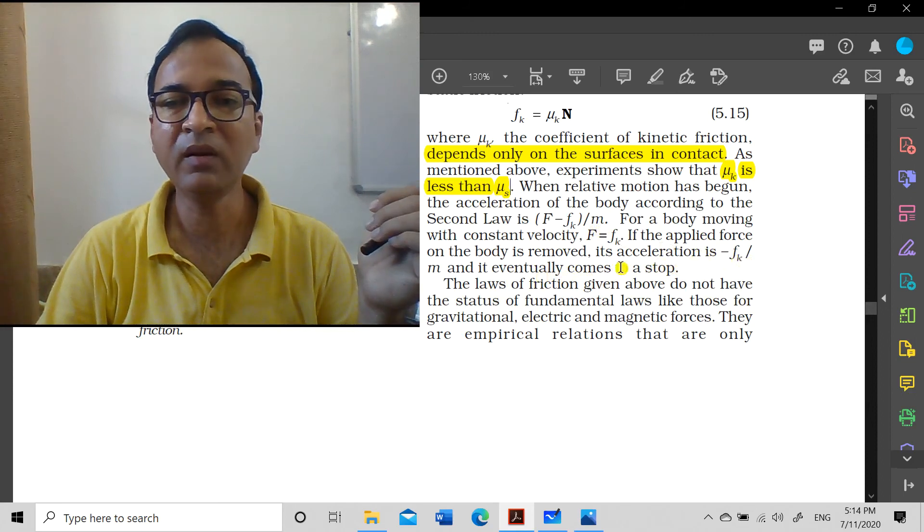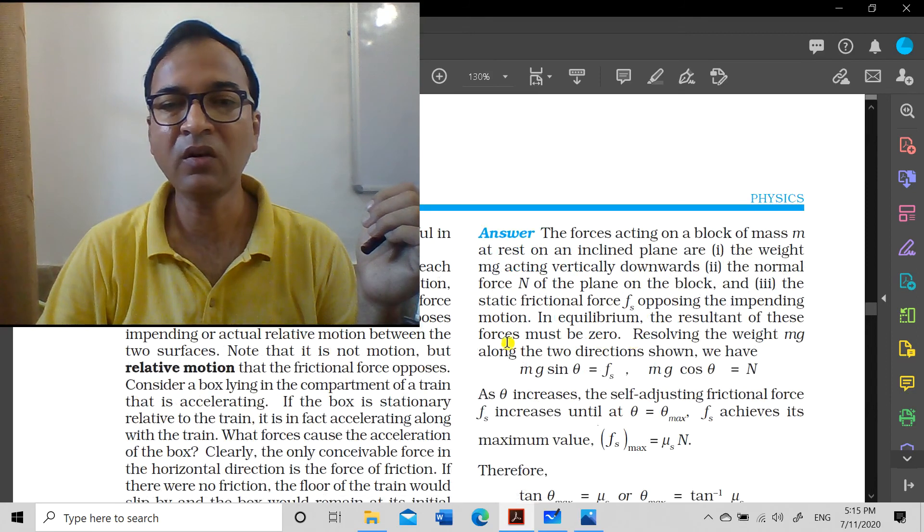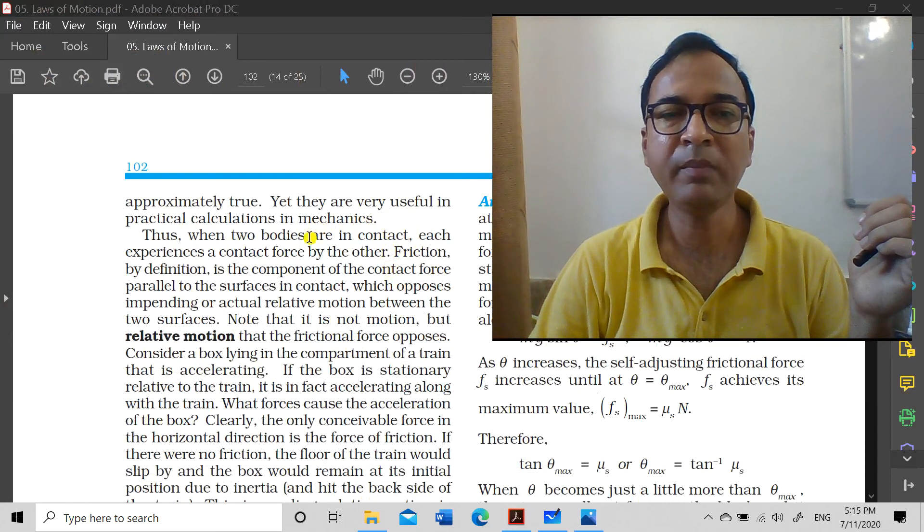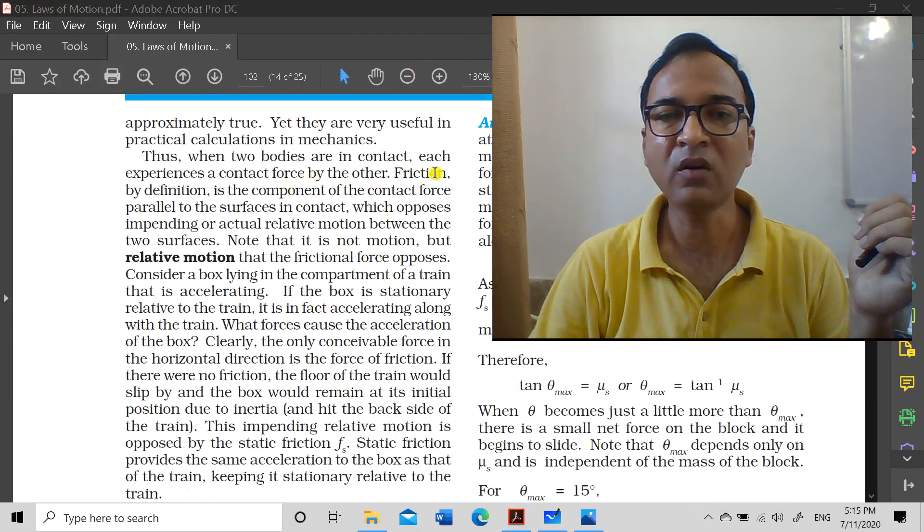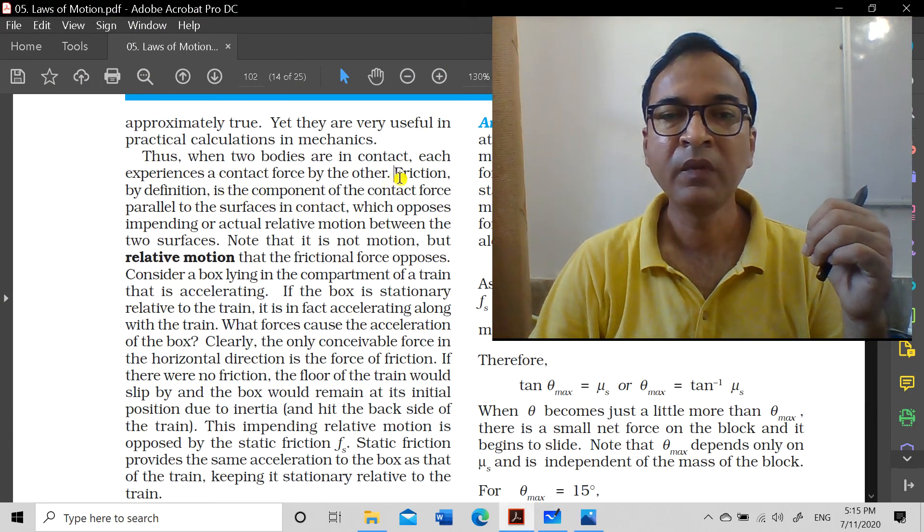The laws of friction given above do not have the status of fundamental laws like those for gravitational, electric and magnetic forces. They are empirical relations that are only approximately true, yet they are useful in practical calculations in mechanics. When two bodies are in contact, each experiences a contact force by the other. Friction by definition is the component of the contact force parallel to the surface in contact which opposes impending or actual relative motion between the two surfaces.